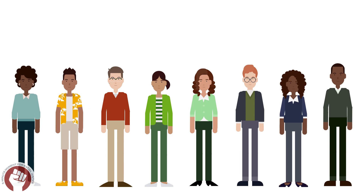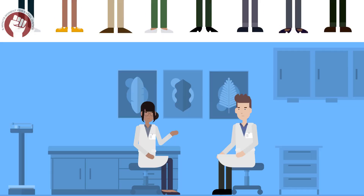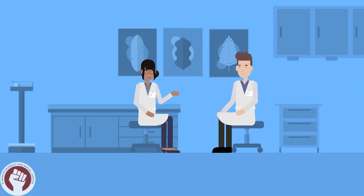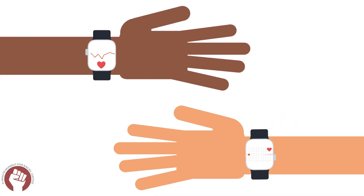Specifically, melanin — the pigment in skin cells — can absorb light in a way that overestimates oxygenation. Many current sensor-based devices that rely on contacting the skin, such as Apple Watches and the Fitbit, have previously reported higher degrees of device error for darker skin tones.